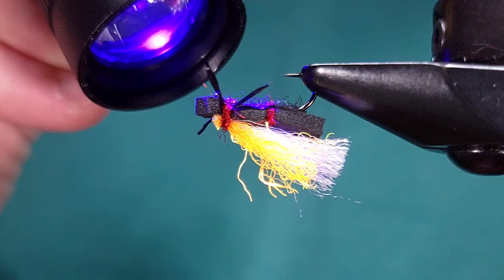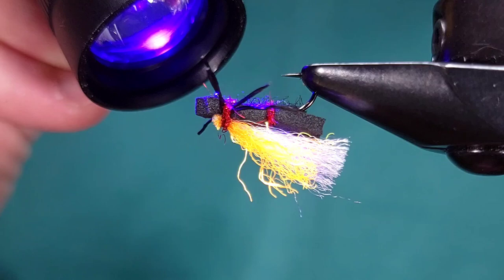Again do whatever you would like with this fly however you like to fish it. Again this is the mini or micro chubby. Tie them up. Let me know what you think. Let me know how you like to tie them or your different variations. Thanks for checking in.